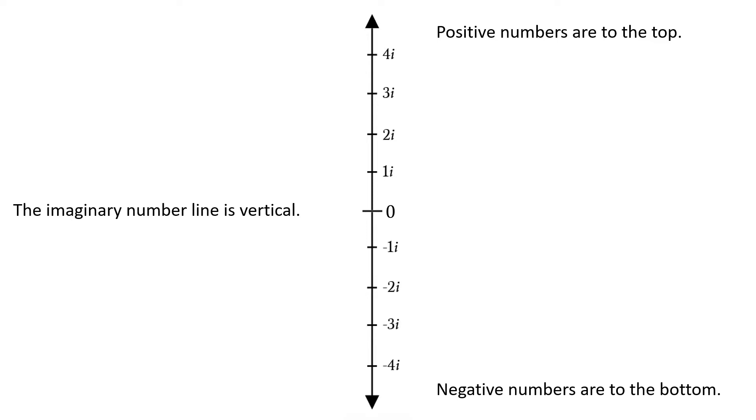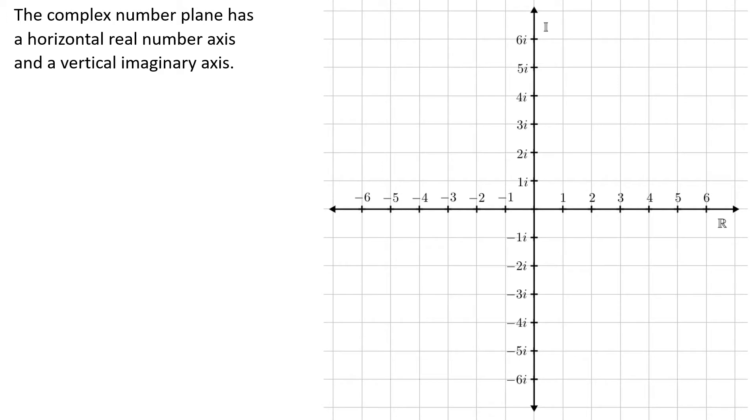And then the one part of the imaginary number line that's kind of weird, look who's in the middle: zero. That's a real number. That is the only real number on that imaginary number line. When we put these together to get the complex number plane, the real number line goes left and right, the imaginary number line goes up and down.